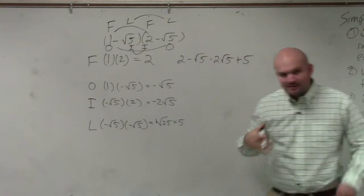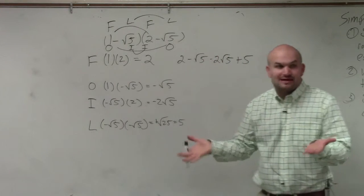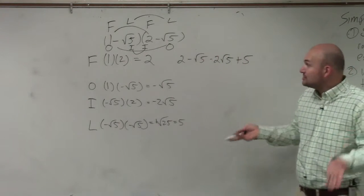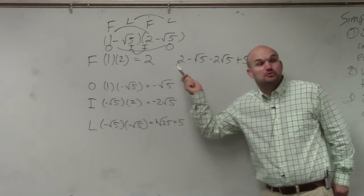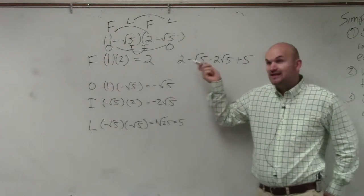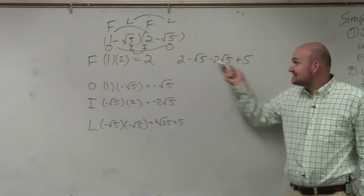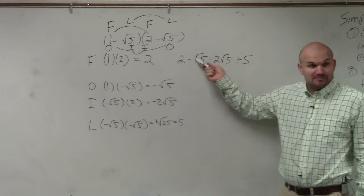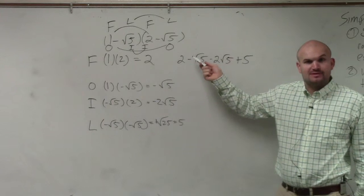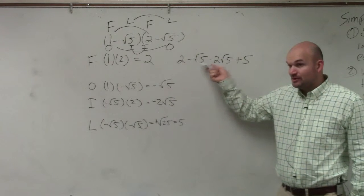And if you guys remember, when adding and subtracting radicals, you can only combine radicals when the index, meaning it's a square root, cube root, or fourth root, is exactly the same, as well as the radicand is exactly the same. Do you guys believe me that the index is the same? They're both square roots. And the radicand is the same, right? They're both the number 5.